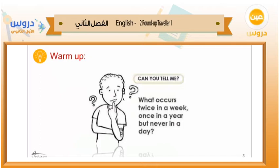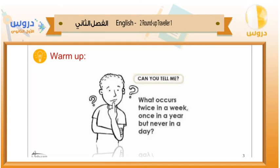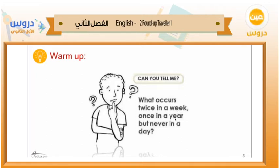Warm up. Now look at this picture here. Can you tell me what occurs twice in a week, once in a year, but never in a day? The answer is the letter E. The letter E occurs twice in a week, once in a year, but never in a day — there is no E in 'day'.